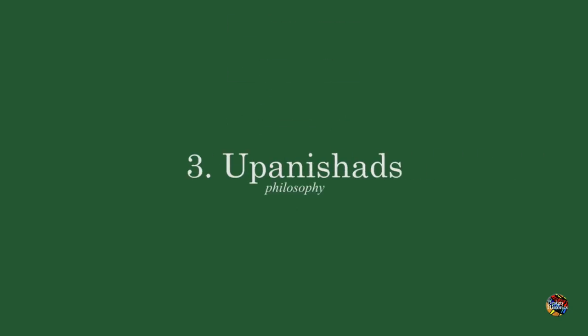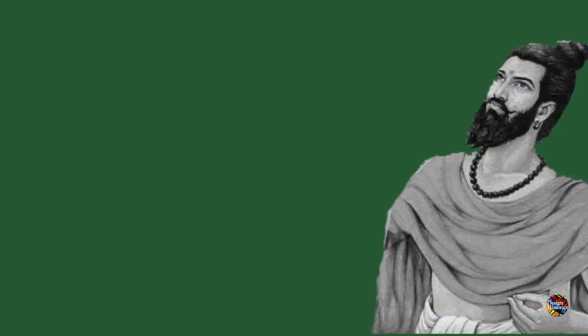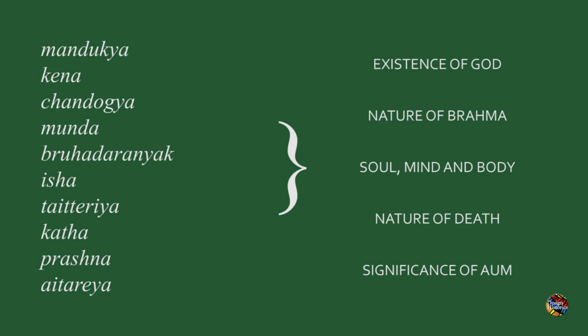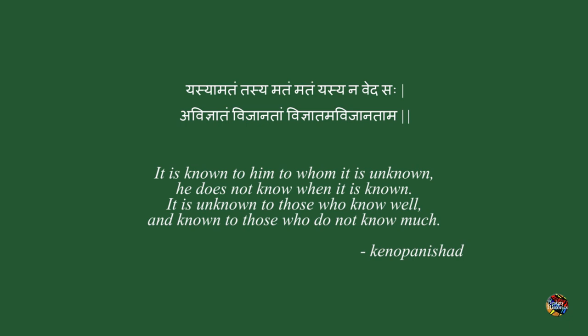Finally, the last thing the Vedic age gave us is the Upanishads. Just like any other religion-centric society, in the Vedic society too, eventually people started asking questions about the validity of gods and rituals, which led to the creation of the philosophy of the Upanishads and Aranyakas — a collection of great philosophical thoughts about life, reality, the universe, its creation, and one's purpose in it. For instance, this verse from the Kena Upanishad: 'It is known to him to whom it is unknown; he does not know when it is known. It is unknown to those who know well, and known to those who do not know much.'